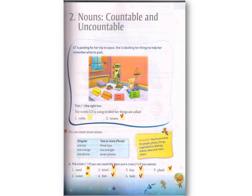You can count most nouns. Here in the box, you can see singular and plural. Under singular: one toy, one orange, one foe. When there are more than two, you call it plural. So: three toys, two oranges, seven foes — these are all countable nouns. Remember, nouns are words for people, places, things, organizations, etc.